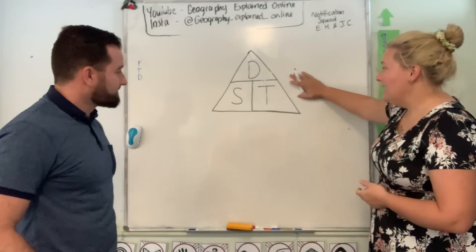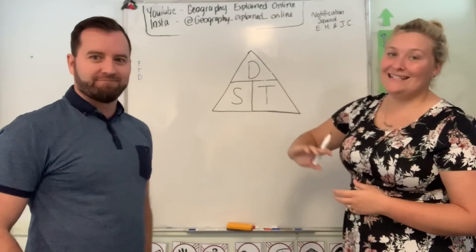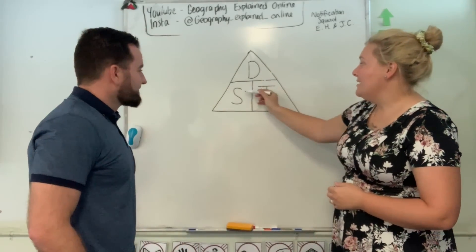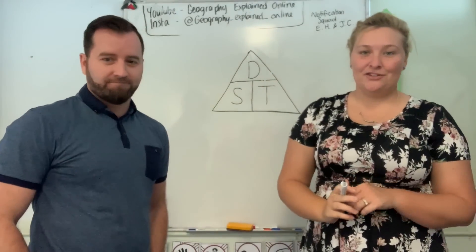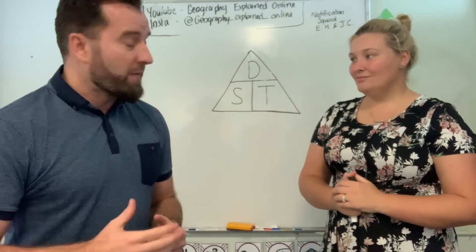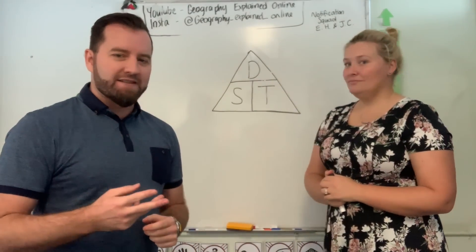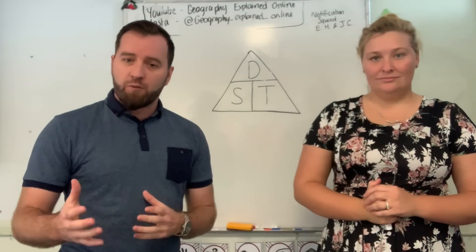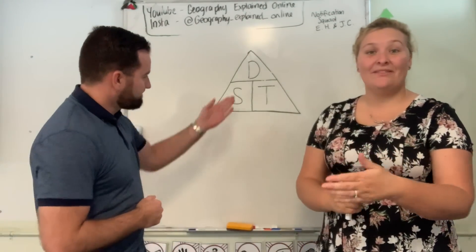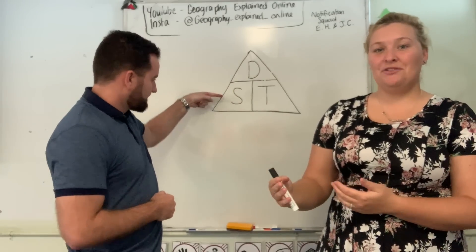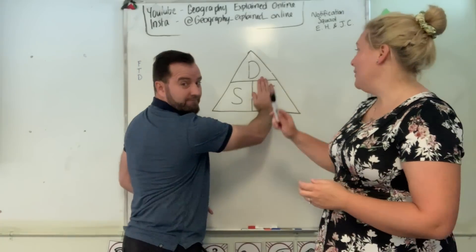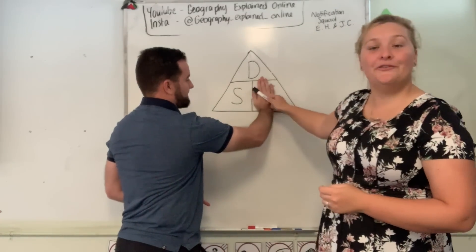We draw this triangle and you simply need to remember 'daylight saving time.' Once you draw your triangle, you draw in D, S, T — making sure that the D is on top. In the HSC or pretty much any other question, you're going to be given two of these three, and using the triangle you can figure out what the other one is. For example, if we were given the distance and the speed someone travelled, we block out time because that's what we're trying to find, and we're left with: time equals distance over speed.